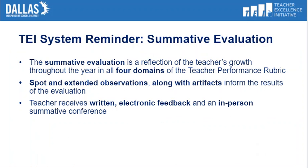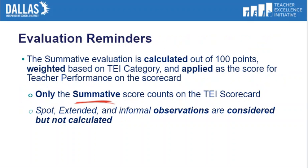The summative evaluation is a reflection of the teacher's growth throughout the year and all four domains of the teacher's performance rubric. Spots and extended observations along with artifacts inform the results of the evaluation. Teachers receive written electronic feedback and in-person summative conferences. There are multiple evaluation observations during the year. Spots, extended and informal observations are intended to identify areas for growth, meaning they do not factor into the teacher's score on the scorecard. The score is only derived from the summative evaluation.